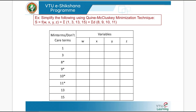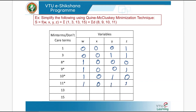The binary equivalents are: 1 = 0001, 3 = 0011, 8 = 1000, 9 = 1001, 10 = 1010, 11 = 1011, 13 = 1101, and 15 = 1111.